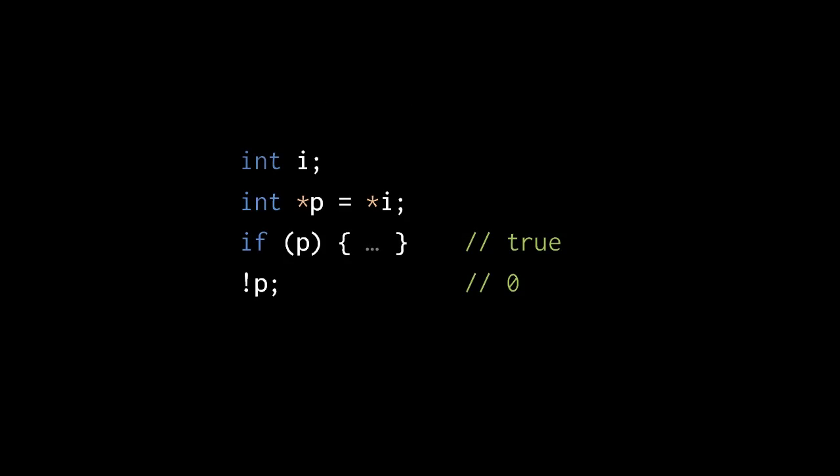Also like number values, pointer values have truth value. A null pointer is considered false, while any non-null pointer is considered true. So, because C always leaves address 0 unused, we know that, after assigning the dereference of variable i to p, the pointer held in p will hold a non-null pointer value.